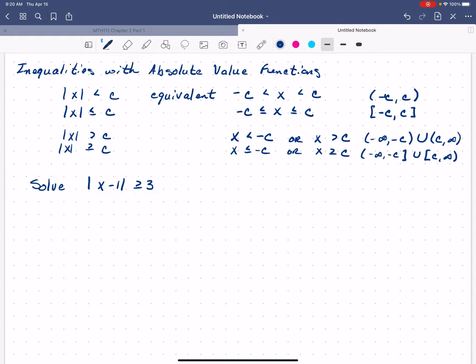And I'm going to write that this is equivalent to x minus 1 is less than or equal to negative 3, or x minus 1 is greater than or equal to 3. Now I reversed those orders, so I'll fix that for you. There we go, so now this looks just like the fourth row in our little table up there.